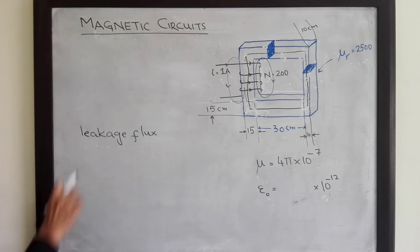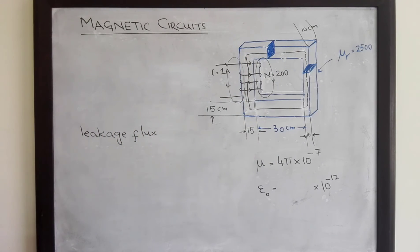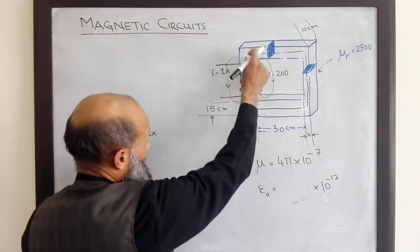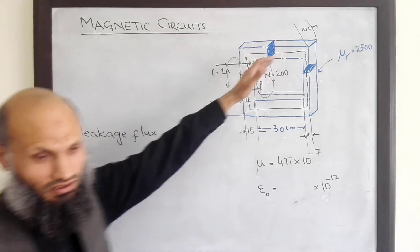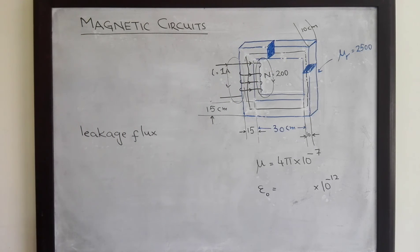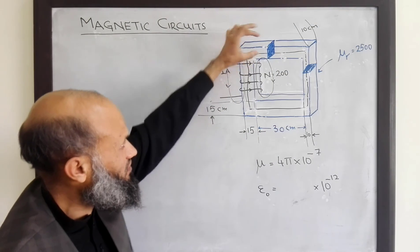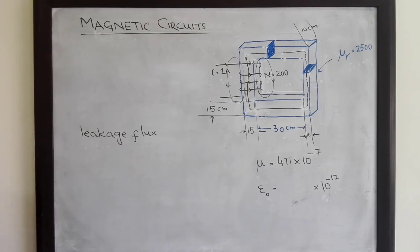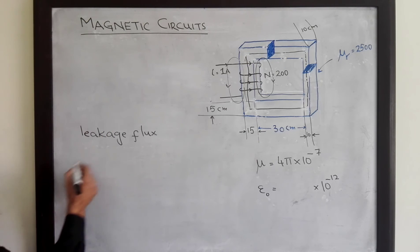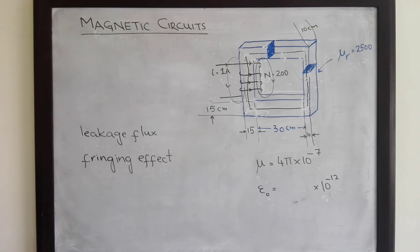Another reason for inaccuracy in magnetic circuit calculations is the computation of mean path length and cross-sectional areas, which are not very accurate. Typically, the cross-sectional area at the corners is not the same as elsewhere. So there are inaccuracies in the cross-sectional area computation since it is not uniform throughout the circuit. This effect is called fringing effect, which also results in inaccuracies in calculations.